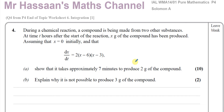This question is about differential equations. During a chemical reaction, a compound is being made from two other substances. At time t hours after the start of the reaction, x grams of the compound has been produced. Assuming x equals zero initially and that dx/dt equals two times (x minus 6) times (x minus 3), show that it takes approximately seven minutes to produce two grams of the compound.